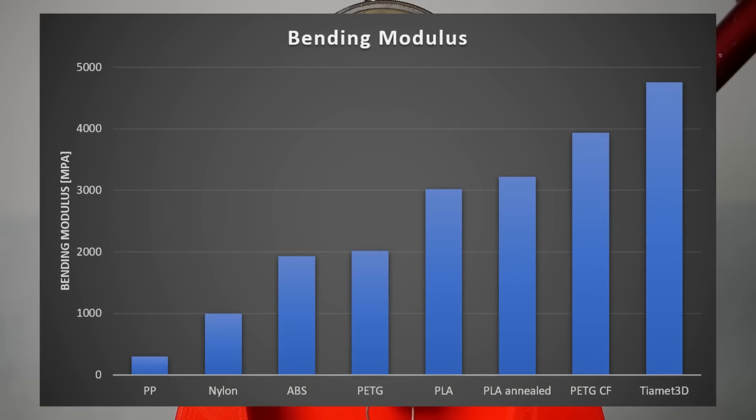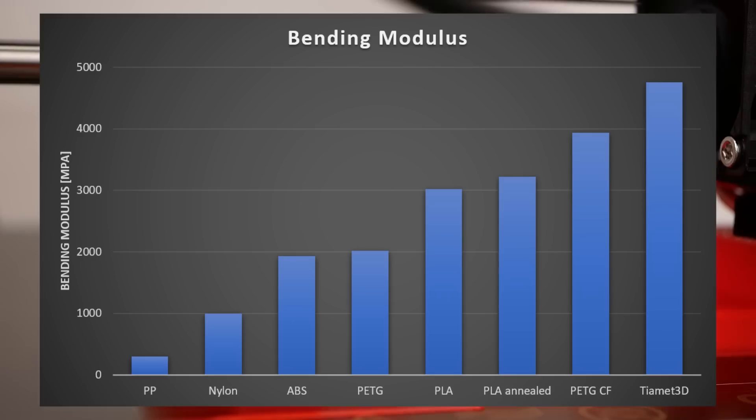As expected, PP is by far the least stiff material with a modulus of only around 300 MPa. My nylon was at around 1000 MPa. ABS and PETG are at roughly 2000 MPa, and PLA is even an additional 50% stiffer with 3000 MPa in the as-printed state and even a bit stiffer if you anneal the material. The carbon fiber reinforced PETG doubles the stiffness of normal PETG, and the new boy on the block, nano diamond reinforced PLA, is the most rigid with almost 5000 MPa bending modulus.